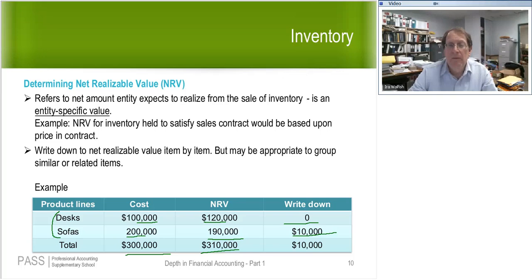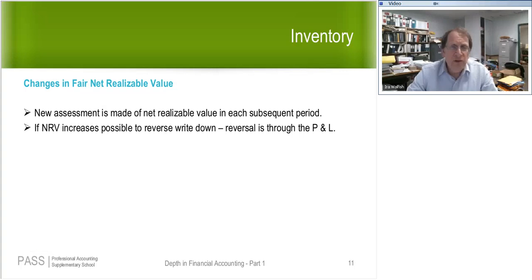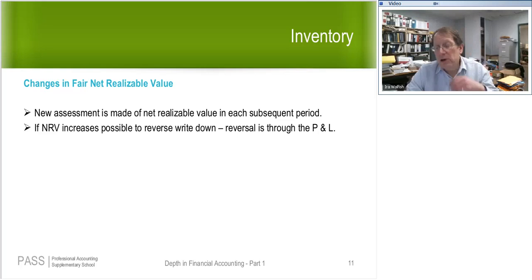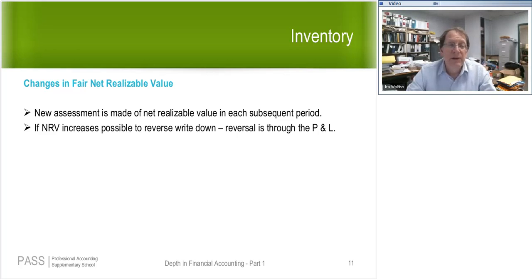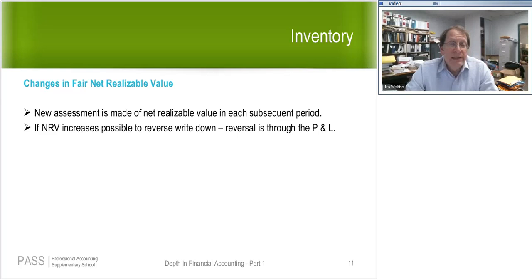Changes in net realizable value for inventory: I can't write it up — it's lower of cost and NRV. I can write it down, and the write-down goes to the income statement. Compare that to intangibles under the revaluation method, where a write-up goes to OCI, not the income statement. For inventory, write-downs go through P&L, and importantly, I'm also allowed to reverse the write-down if NRV goes back up — and that reversal also goes through the income statement.